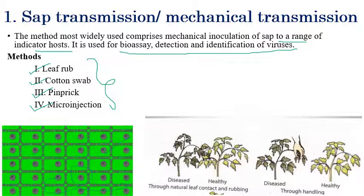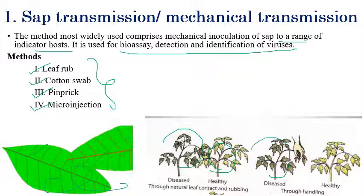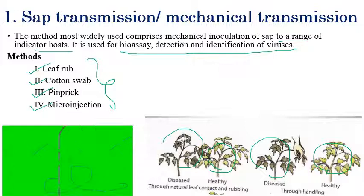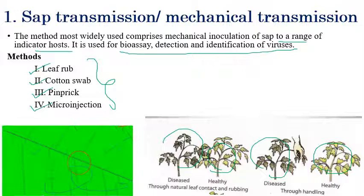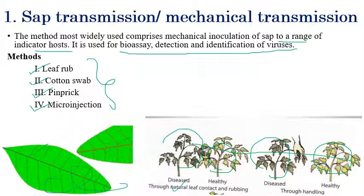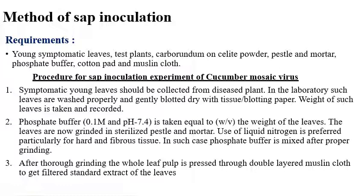Micro injection is another method of sap transmission. By means of injections, the virus can be introduced into the plant. The diseased plant and healthy plant are shown here to illustrate how the virus is transmitted from diseased plants to healthy plants. We will now see the procedure of sap inoculation so you can understand how the sap transmission method is employed in laboratory techniques.